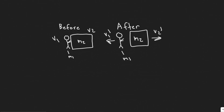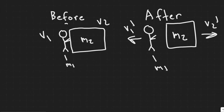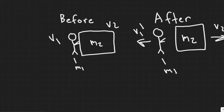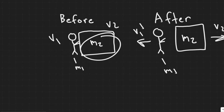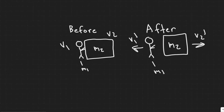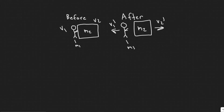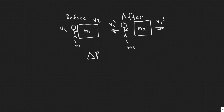We're going to be solving for a bunch of things here, but first let's understand what's going on before and then after the push. In order to solve this problem, we're going to use the law of conservation of momentum, which tells us the momentum before has to be equal to the momentum after. So P initial equals P final.